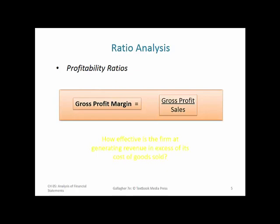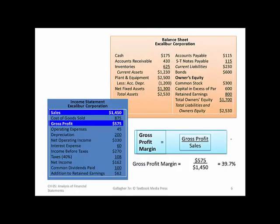Gross profit margin is gross profit divided by sales — what percent of all of our sales, the top line on the income statement, is our gross profit. For our example company, Excalibur Corporation, we have gross profit of $575 million and sales of $1.45 billion. So 575 over 1450 gives us about 40% of sales represented by gross profit.